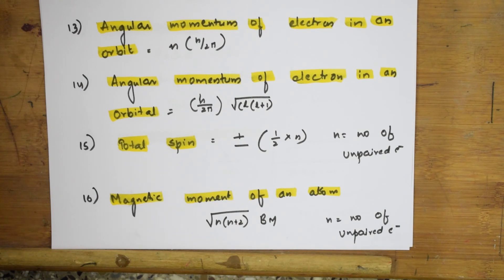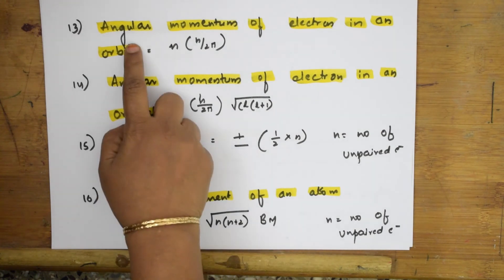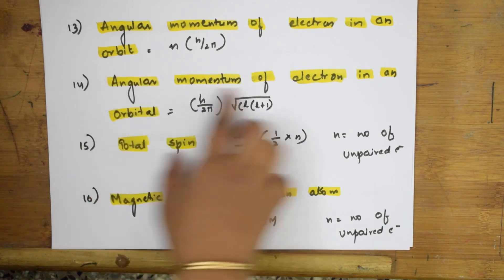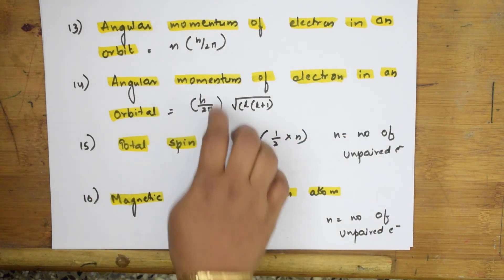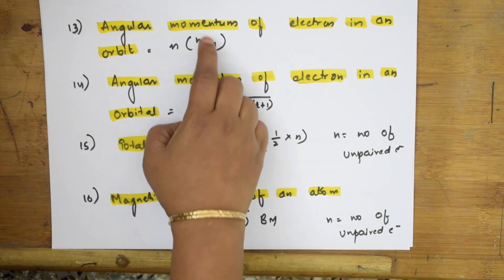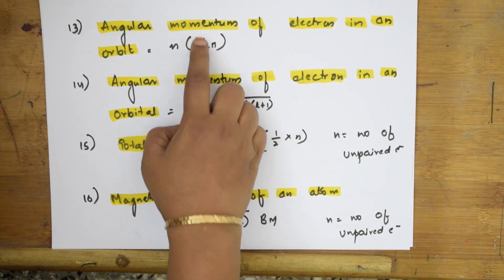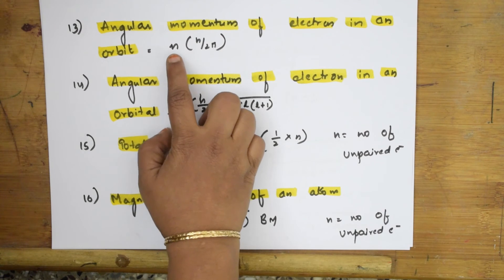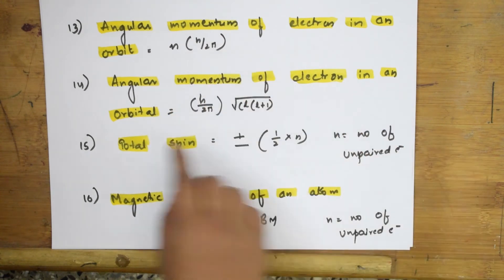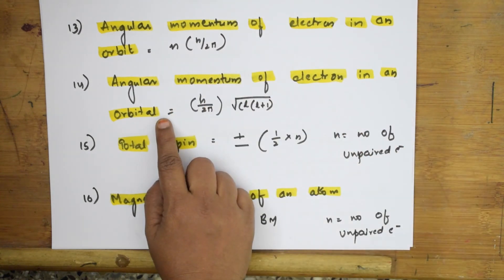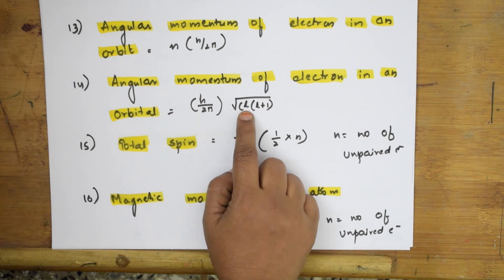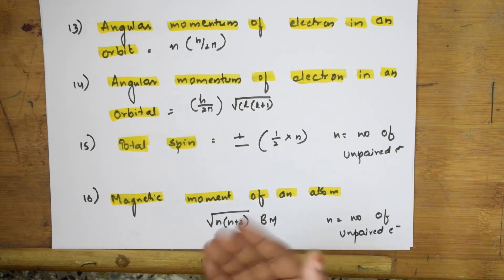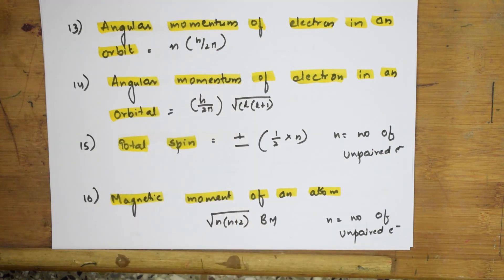There are two angular momentum formulas to remember. Angular momentum of an electron in an orbit is: L = n × h / 2π, where n is the principal quantum number and h is Planck's constant. The orbital angular momentum of an electron in an orbital is: L = (h / 2π) × √(l(l+1)), where l is the azimuthal quantum number. If the question says 'in an orbit,' use the first formula; if it says 'in an orbital,' use the second.